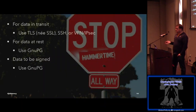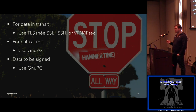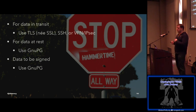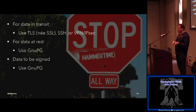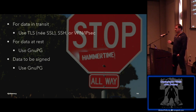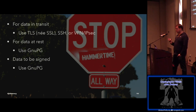If you take anything away from this presentation: for data in transit, use TLS — we used to call this SSL. Use SSH or some kind of VPN. Data in transit means data going across a network or a wire. For data at rest, use GPG. Data at rest means on a hard drive, on flash, up in the cloud like S3. If you need it encrypted at rest or if you need to sign something, use GPG. If you can't fit your problem into one of these three, try to rework it until you can — you'll save yourself a lot of headaches.